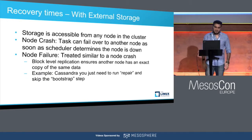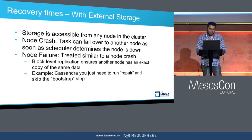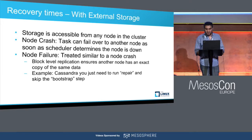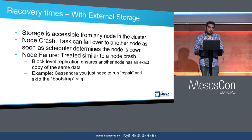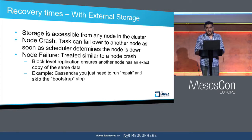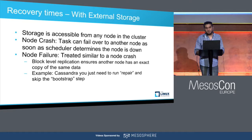With external volumes, your data is accessible from any node in the cluster. If a node goes down, you don't have to wait for it to come back up. The scheduler simply reschedules the service onto another node using the same volume and it comes back to the same state. You only need to repair data for the time it took the scheduler to reschedule the pod. This applies to permanent node failures too — since another replica is always available, you just wait for the scheduler to place the container on another node.